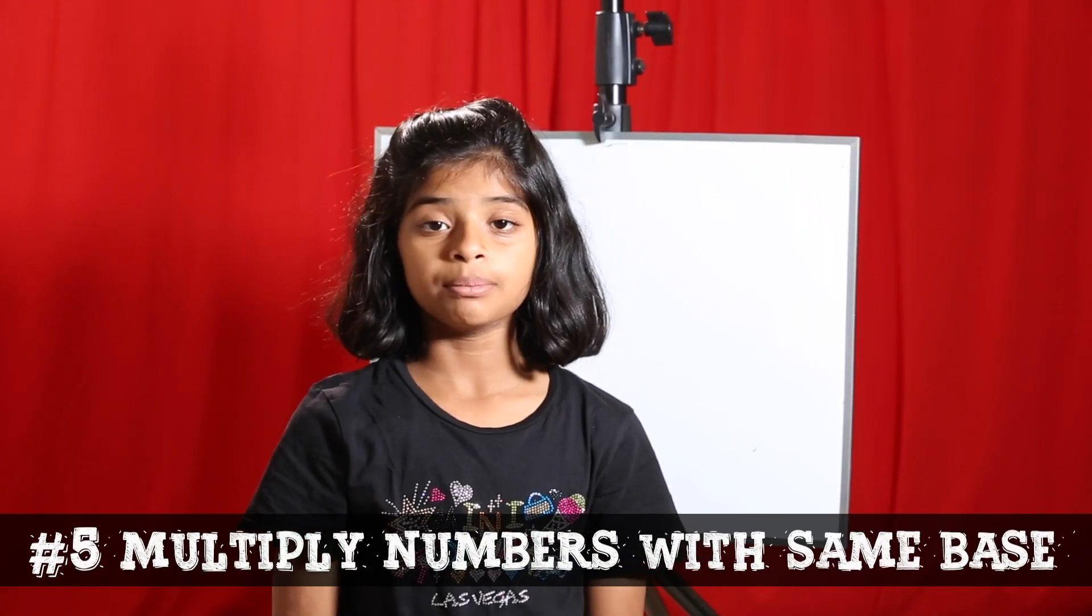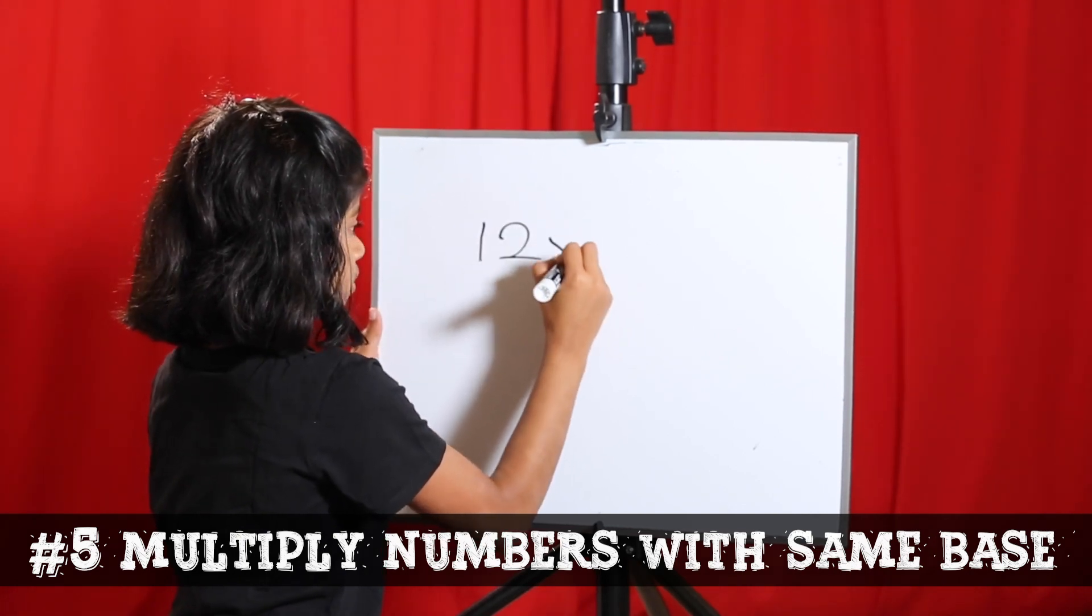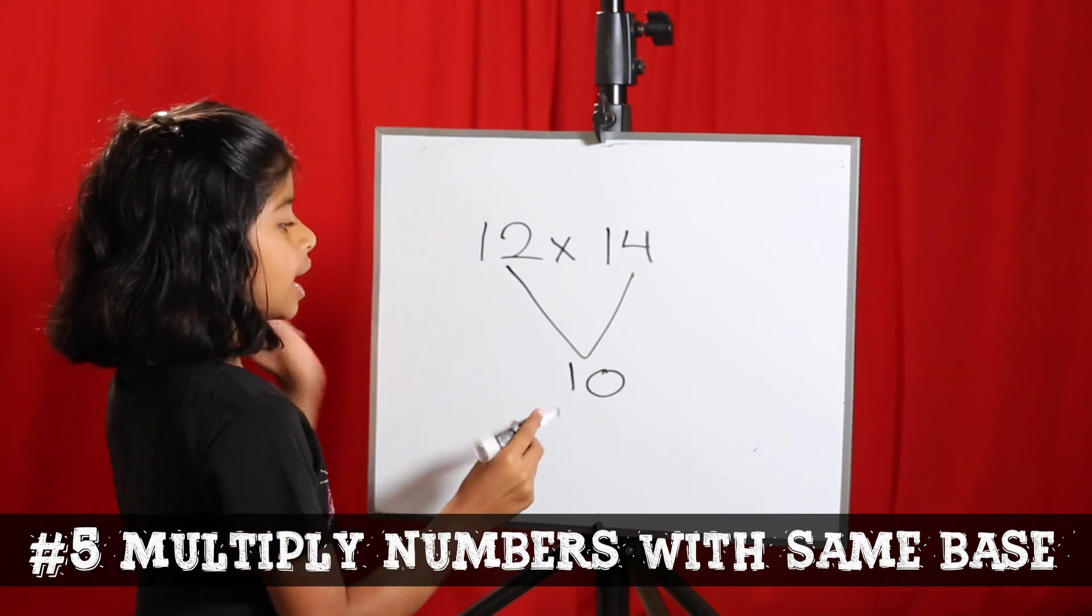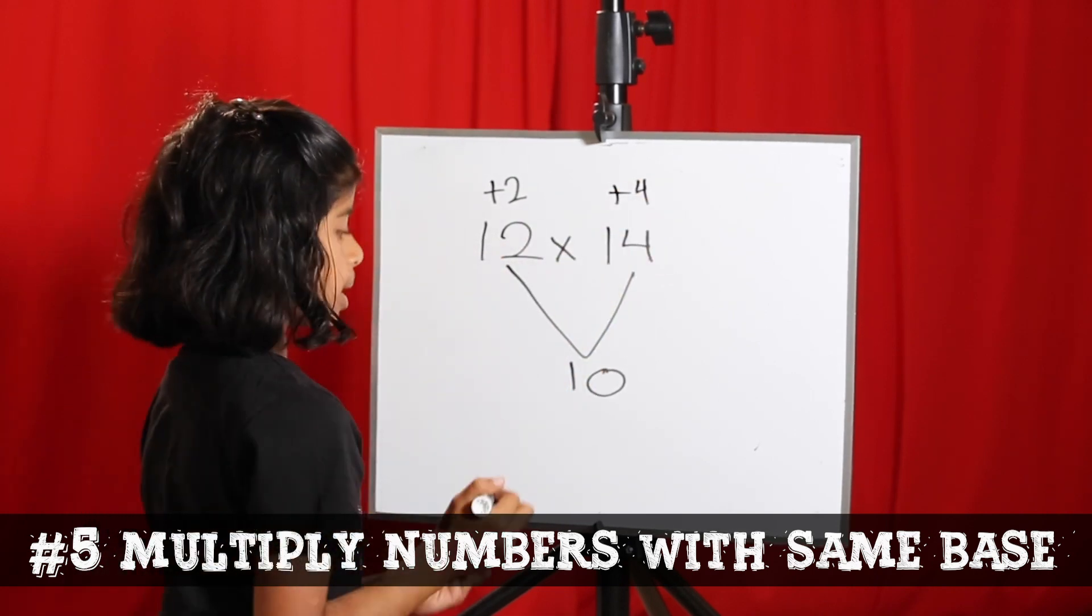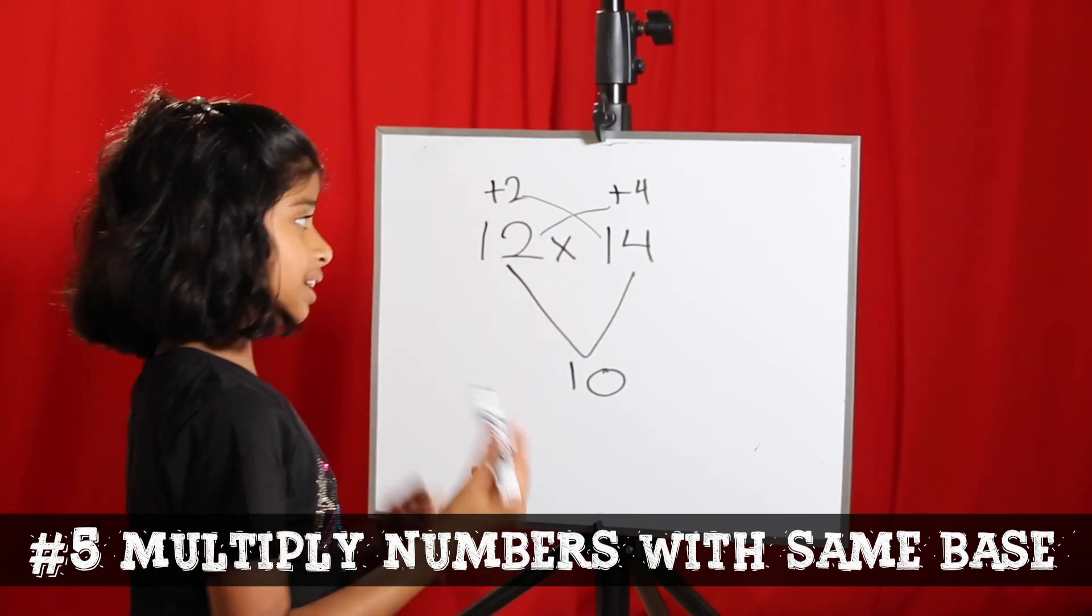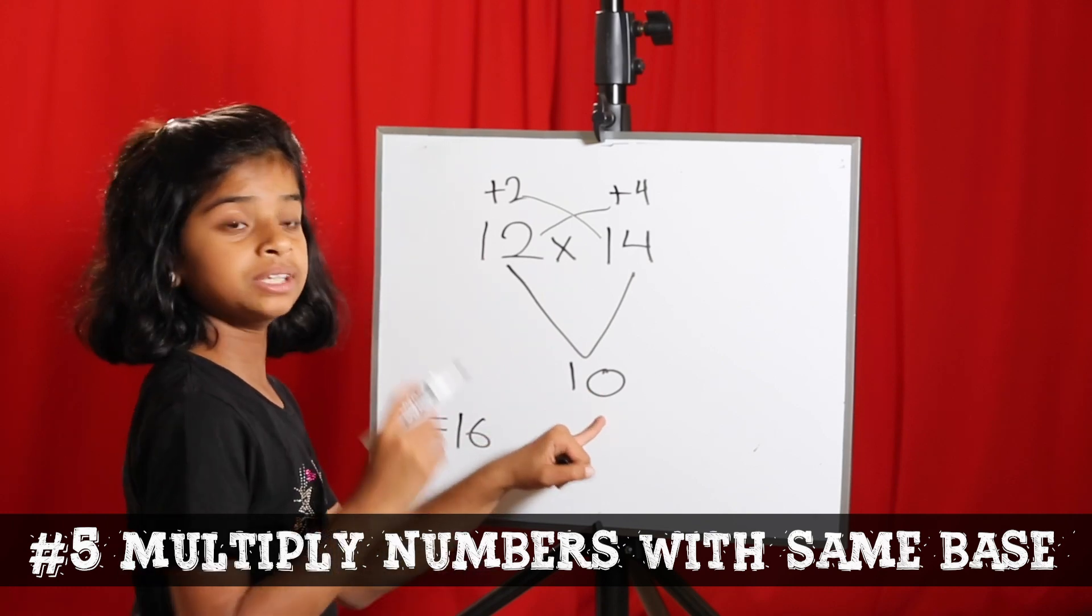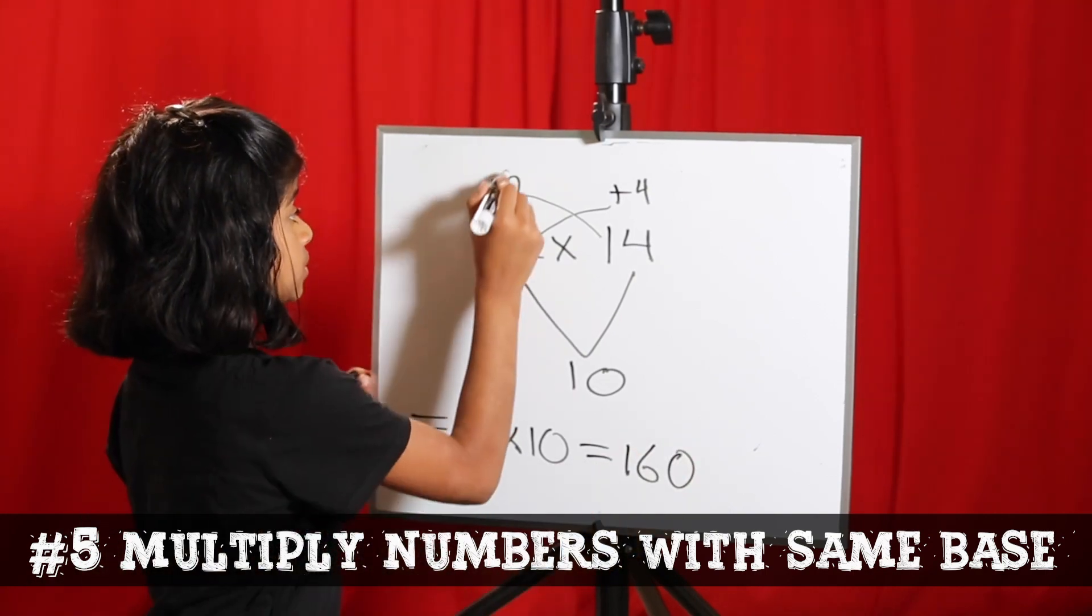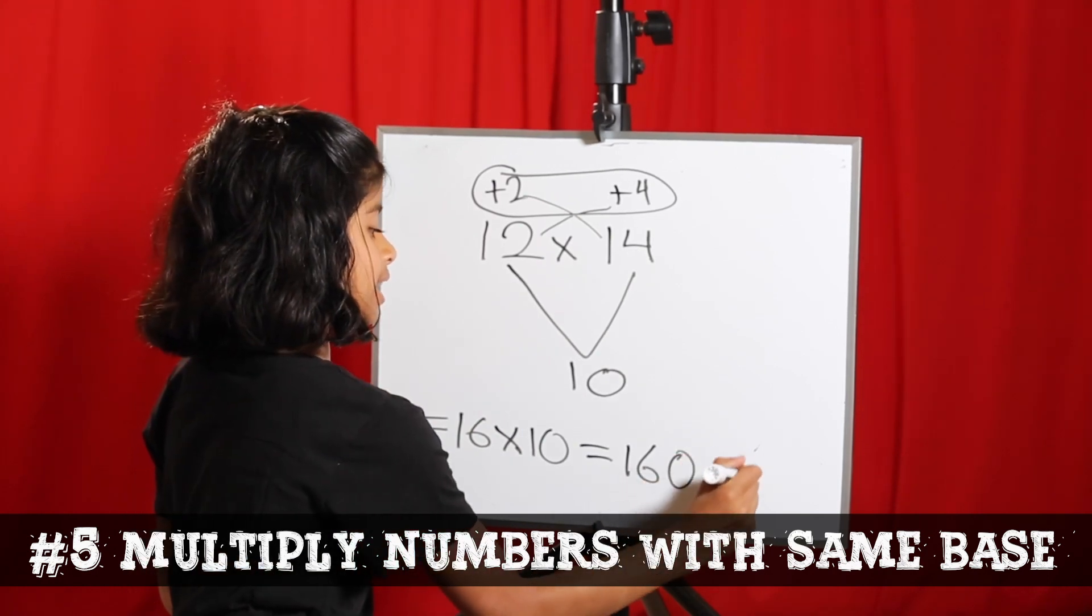Trick number 5. How to multiply numbers with the same base. I'm going to use 12 into 14. As you can see, they both have the same base which is 10. But on top of that, they also have a plus 2 for 12 and a plus 4 for 14. Step 1 is to add either 4 plus 12 or 2 plus 14. Either way, they equal to 16. Then you have to multiply that by 10 because they have the same base. 16 into 10 which is 160. Then you have to take both of the numbers on the top which were extra and multiply them which is 8. Then add 8 to the sum you got before. So the answer should be 168.